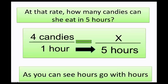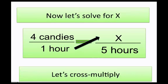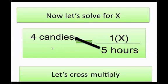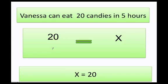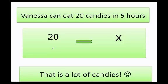Now that I have set up the proportion, I can go ahead and cross multiply, and I do one times x, four times five. Finally, four times five equals twenty. That means that Vanessa can eat twenty candies in five hours.